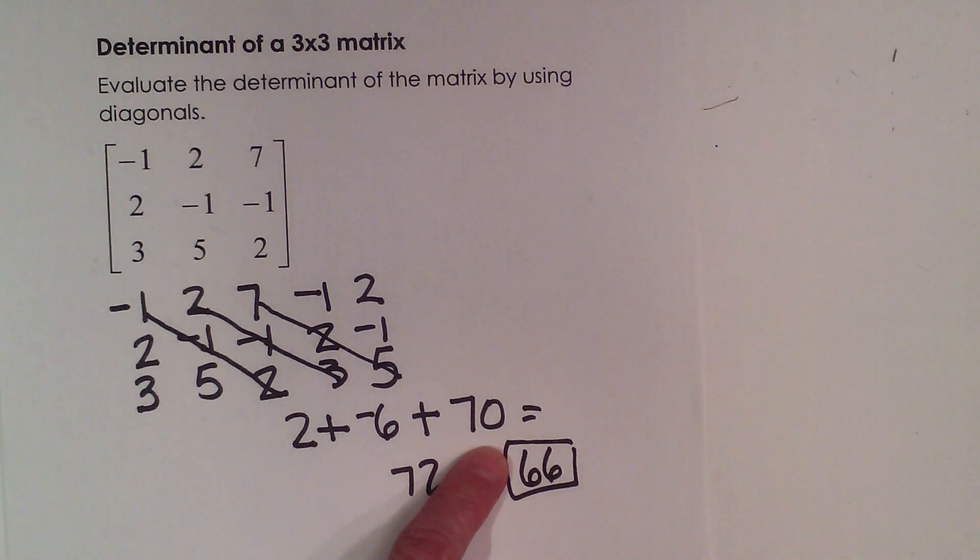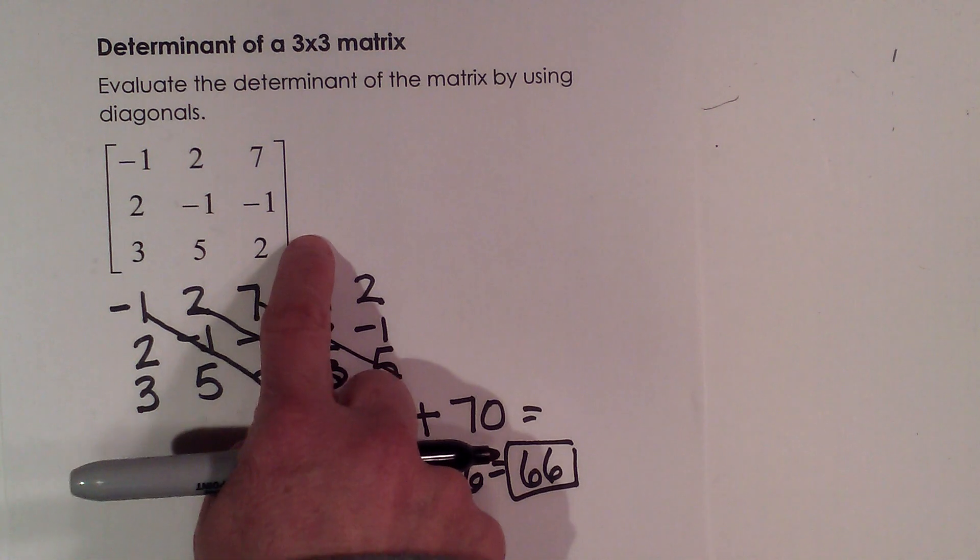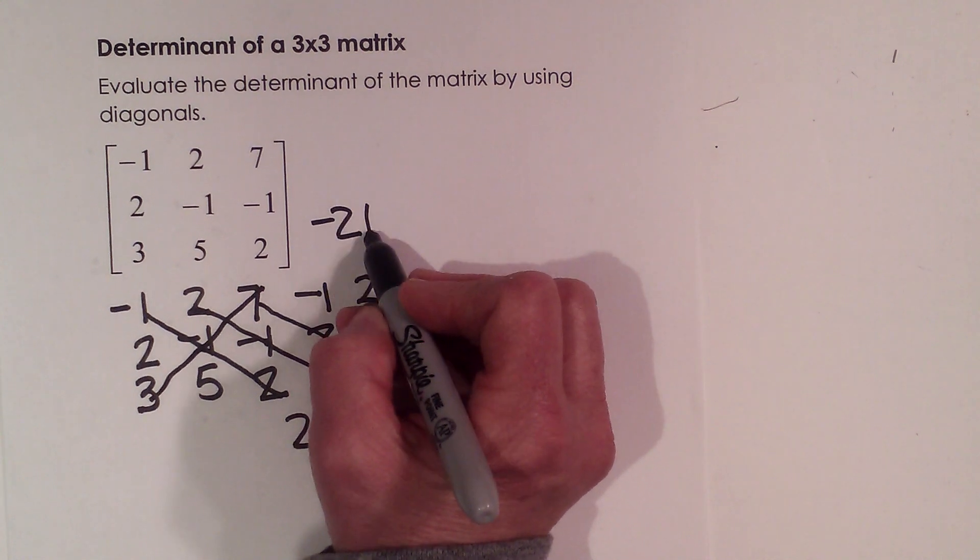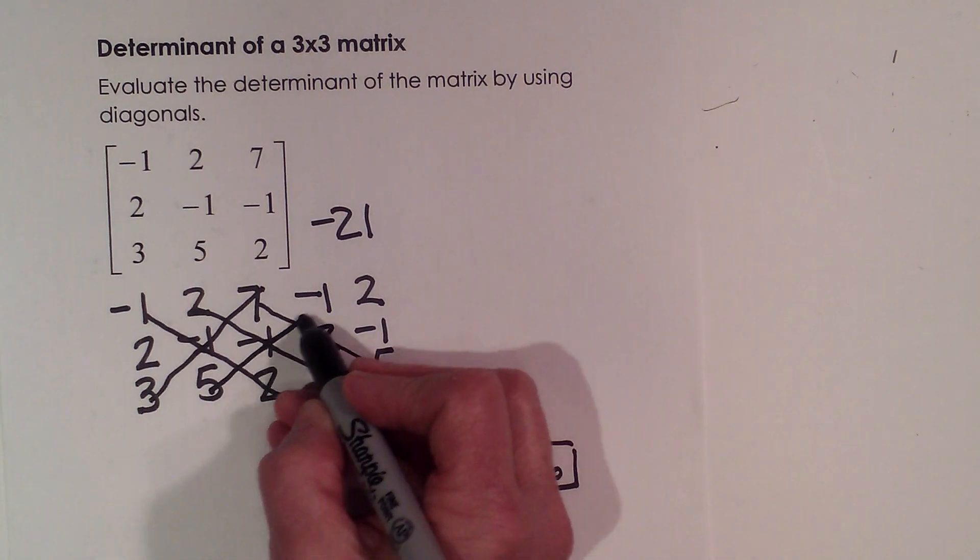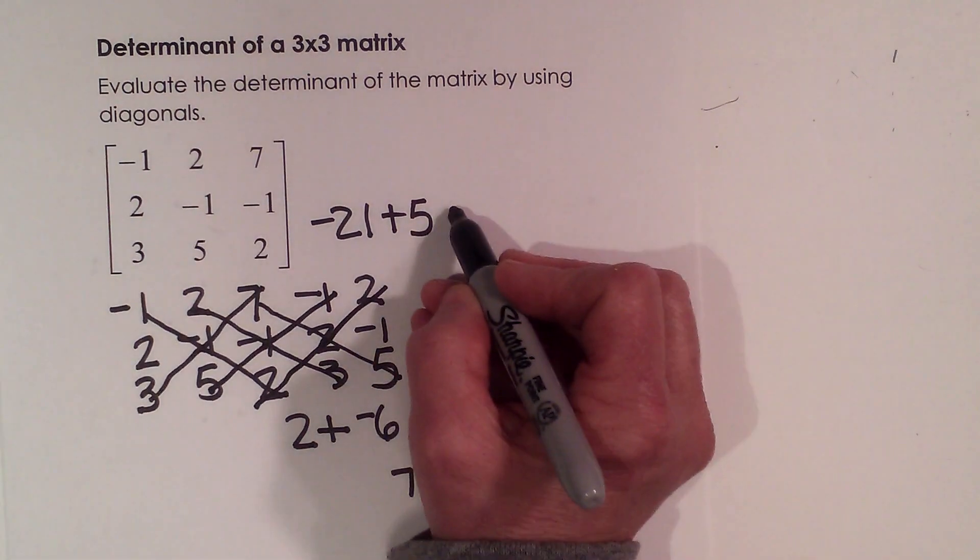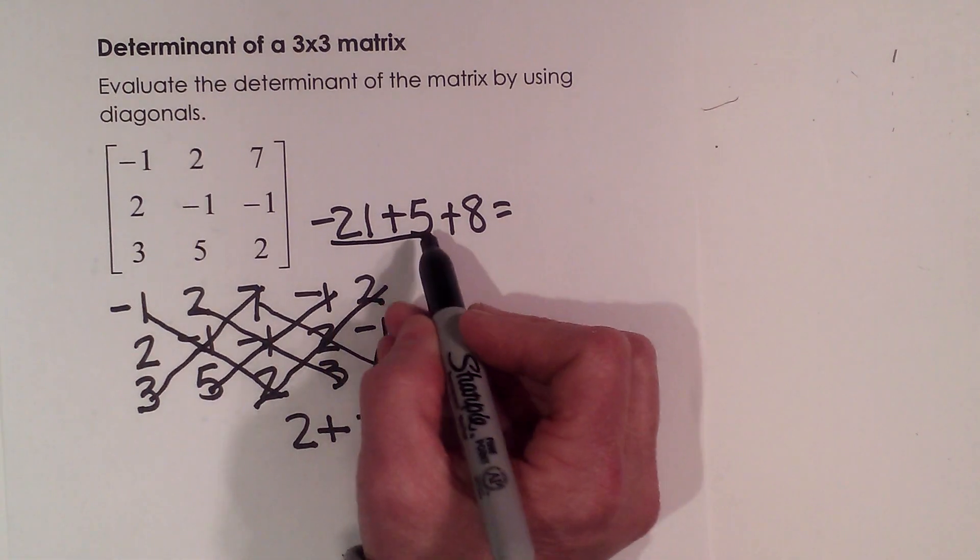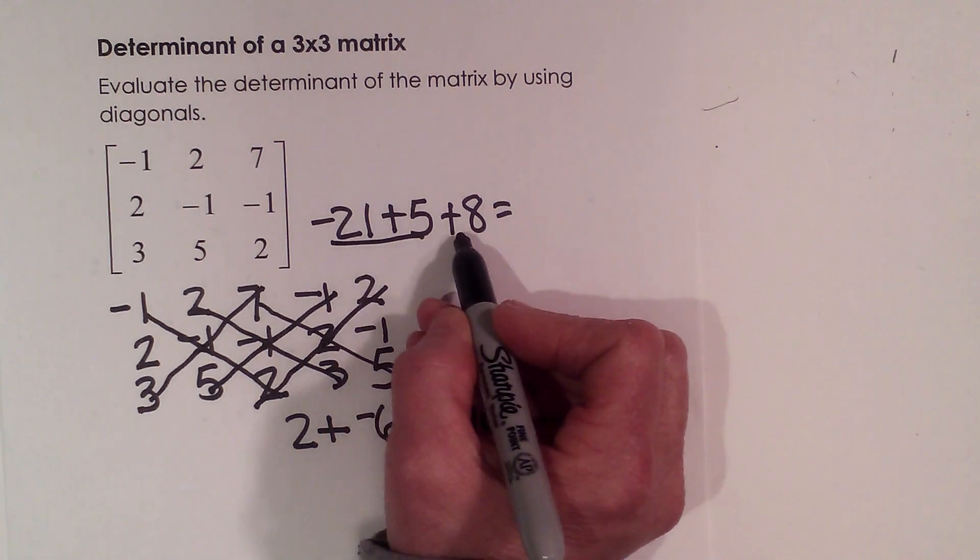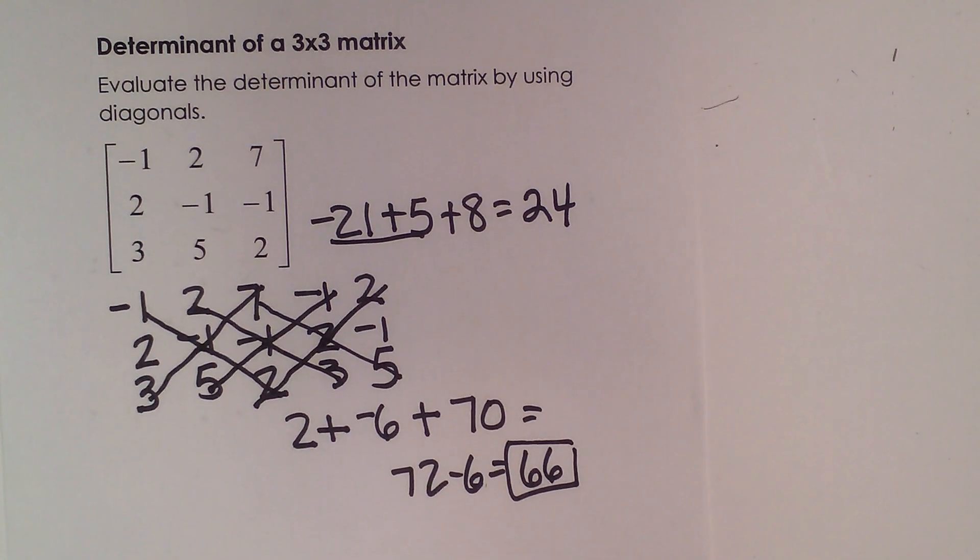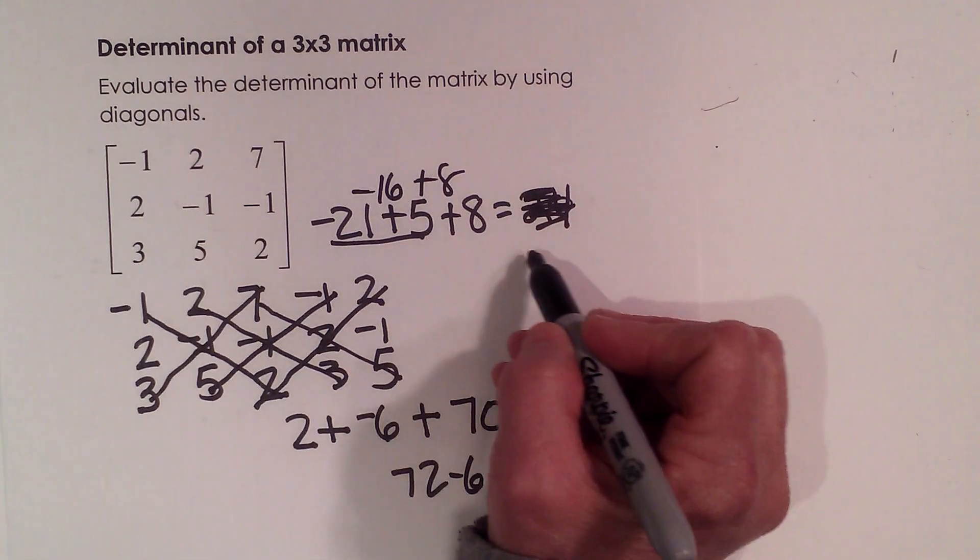Now I'm going to do the same thing with the other set of diagonals. I'm going to start at the bottom left corner and multiply up. So 3 times negative 1 times 7 is negative 21. 5 times negative 1 times negative 1 is positive 5. And 2 times 2 times 2 is 8. Now I'm going to add those together. So negative 21 and 5 is negative 16. Negative 16 plus 8 is negative 8.